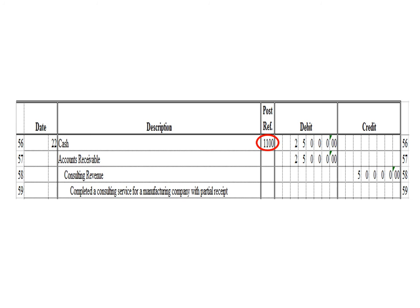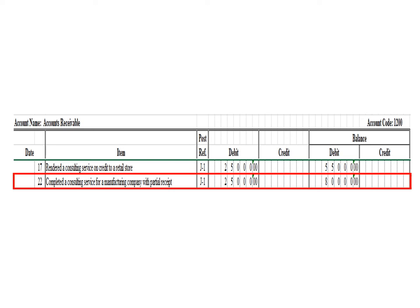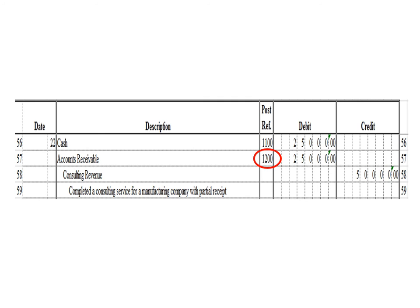Let us post the second debit entry — a debit to accounts receivable for 25,000 pesos. In the accounts receivable ledger, we write date 22, description: completed a consulting service for a manufacturing company with partial receipt, posting reference J1. Under the debit column, write 25,000 pesos. The balance is 80,000 pesos — previous 55,000 pesos debit plus 25,000 debit. As of March 22, the accounts receivable ledger balance is 80,000 pesos debit. After posting, write posting reference 1200.